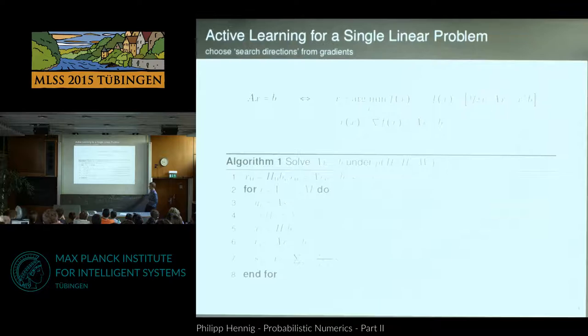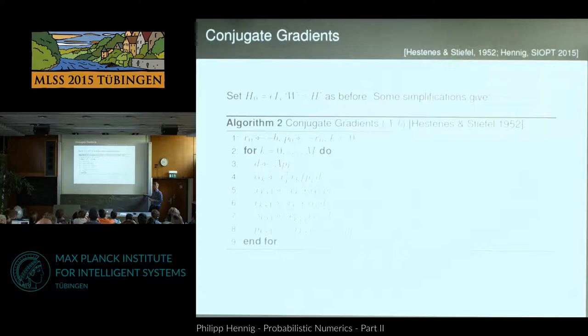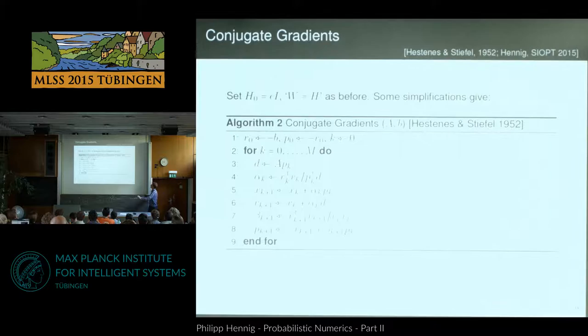If we run Gram-Schmidt on these gradient directions, that's the Arnoldi process, or the Lanczos process on a symmetric matrix. If you write down this algorithm, simplify it, and clean it up, you discover you've invented conjugate gradients, proposed by Hestenes and Stiefel in 1952. So conjugate gradients is an active learning algorithm on a particular linear problem. We've just caught up 150 years of linear algebra from 1809 to 1952. That's great, but still not 2015.